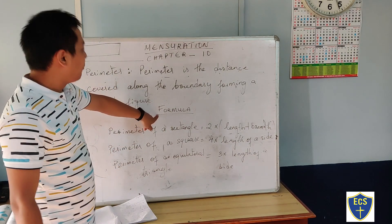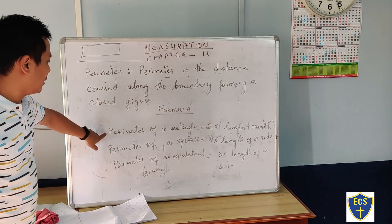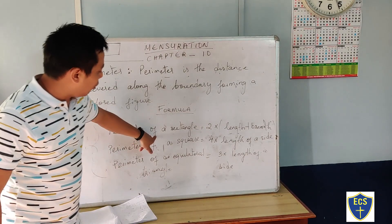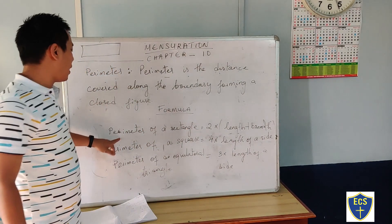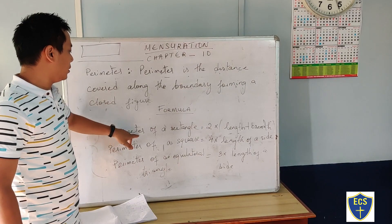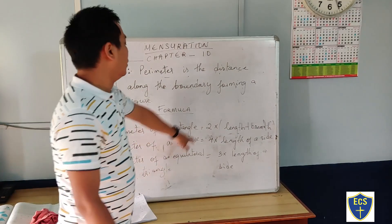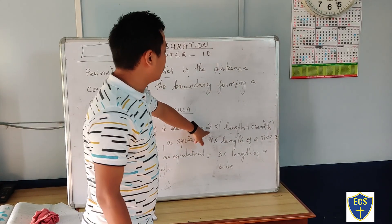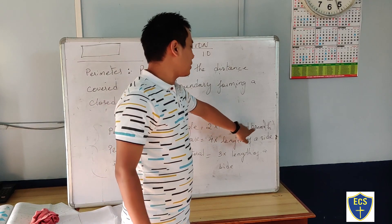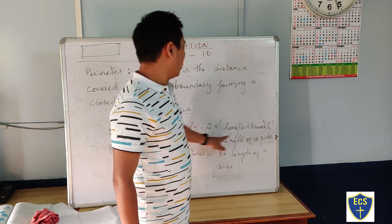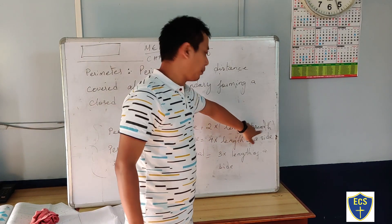Now the formula. Formula number 1 is perimeter of a rectangle. Perimeter of a rectangle — the formula is 2 into length plus breadth. That is: 2 into (length plus breadth).